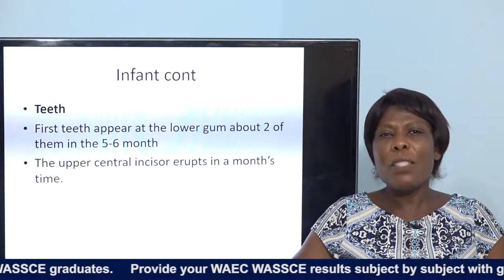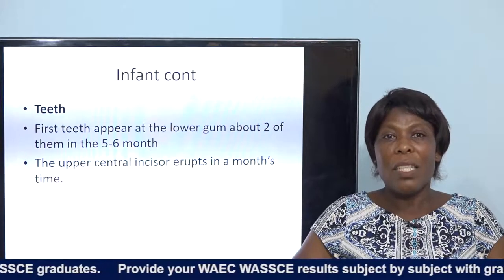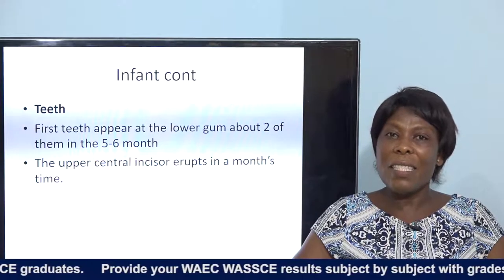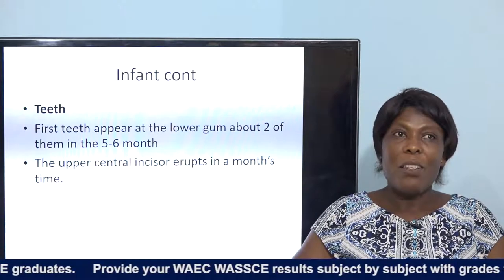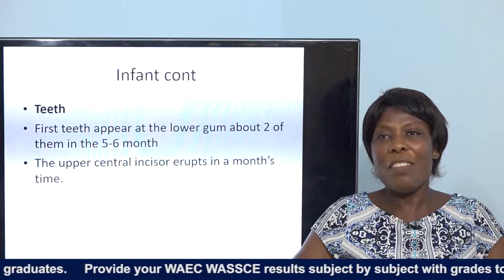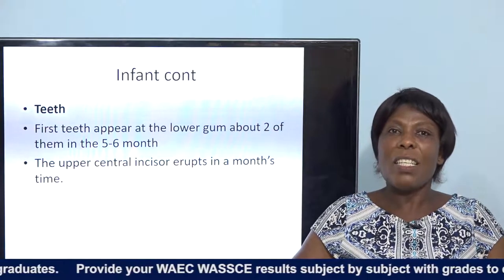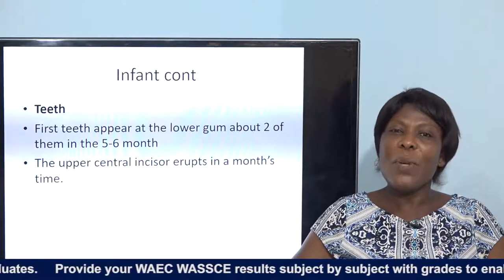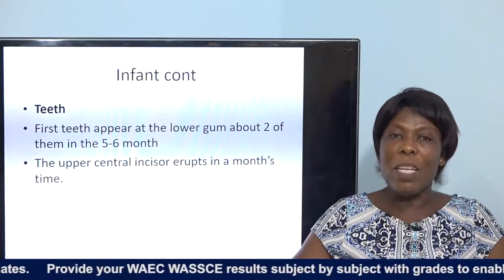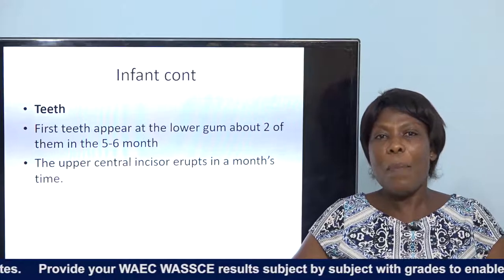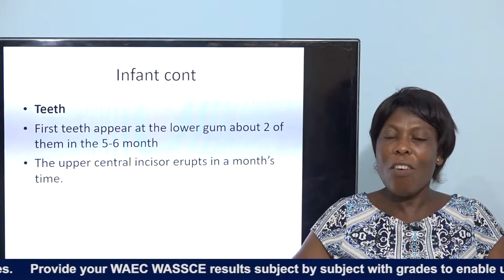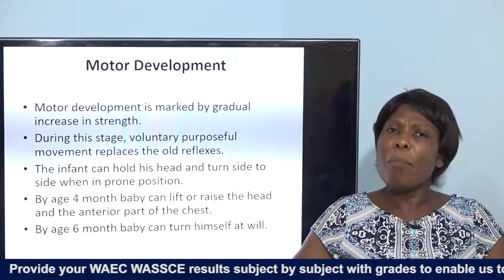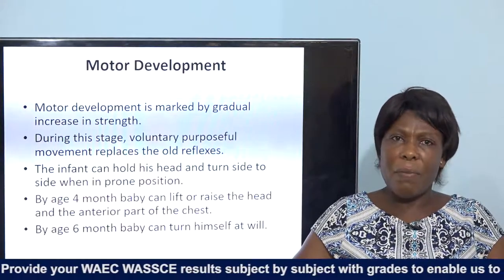After the first two teeth appear at the lower gum, the upper central incisors erupt in the next month. So if by six months the first two teeth appear at the lower gum, by the seventh month you should also see the upper central incisors coming up. Now let's look at the motor development of the infants.